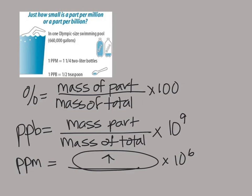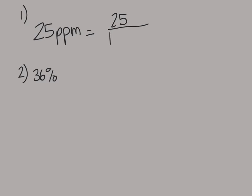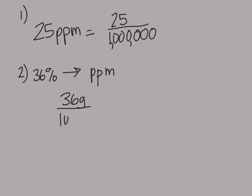Parts per billion, parts per million, even parts per trillion — they're just telling you what factor to multiply by. If they give us 25 parts per million, they're telling us that there are 25 of whatever substance in 1 million total things. If we were trying to change 36% into parts per million, we would recognize that 36% is the same as 36 grams for every 100 grams, and then multiply that by 1 million to get parts per million.